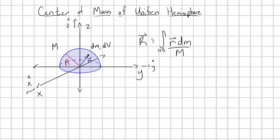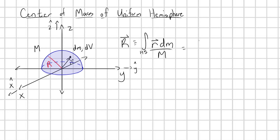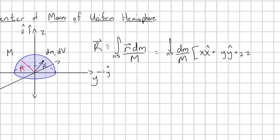I've updated my picture. I defined my directions x, y, and z with unit vectors x-hat, y-hat, and z-hat. We can write out the integral over my hemisphere of dm over m times x·x-hat plus y·y-hat plus z·z-hat — our general position vector r in Cartesian coordinates.